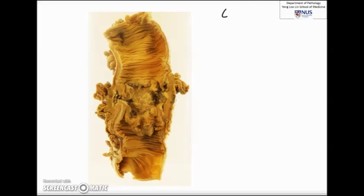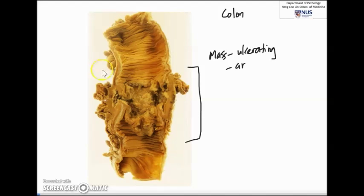This is a specimen picture of a colon and the obvious pathology is seen in this area here, which is the formation of a mass. This mass is luminal or arising from the mucosal surface. There is ulceration as you can see here and a little bit of darkish areas of hemorrhage.